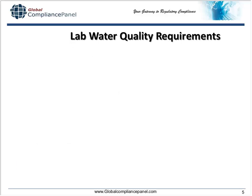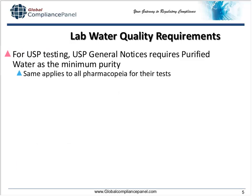Let's talk about lab water quality requirements. If you're doing USP testing, the general notices in USP specify that USP purified water is the minimum water quality you must have. You may have higher purity, but you must not use water of lesser purity for those tests. You can wash labware starting with potable water, but you have to finish by rinsing with purified water. This also applies to all pharmacopeias — each requires that you use at least the purified water quality of that pharmacopeia.